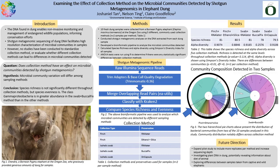For the future direction of this project, I will expand pilot studies to include more replicates per method and increase sequencing data. I will also investigate plant DNA in dung, potentially revealing information about diets of animals. To do this, I would edit the pipeline that I developed to include plant DNA and to see if there is any detected in the samples.